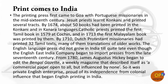Print comes to India: the printing press first came to Goa with the Portuguese missionaries in the mid-16th century. Jesuit priests learned Konkani and printed several tracts. By 1674, about 15 books had been printed in Konkani and the Kannada language. Catholic priests printed the first Tamil book in 1579 at Cochin, and in 1713 the first Malayalam book was printed by them. By 1710, Dutch Protestant missionaries had printed 32 Tamil texts, many of them translations of older works. The English language press did not grow in India until quite late, even though the English East India Company began to import presses from the late 17th century. From 1780, James Augustus Hickey began to edit the Bengal Gazette, a weekly magazine that described itself as a commercial paper open to all but influenced by none — a private English enterprise proud of its independence from colonial influence that began English printing in India.